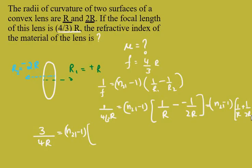2 by 2R plus 1 by 2R which is nothing but n to 1 minus 1 into 3 by 2R will come.